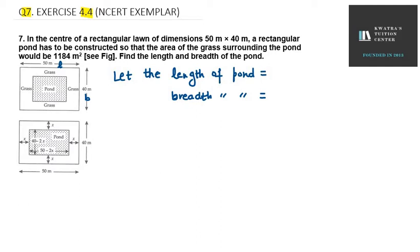In the center of a rectangular lawn of dimensions 50 and 40, the first one is length and the second one is breadth. A rectangular pond has to be constructed so that the area of the grass surrounding the pond would be 1184 meter square.